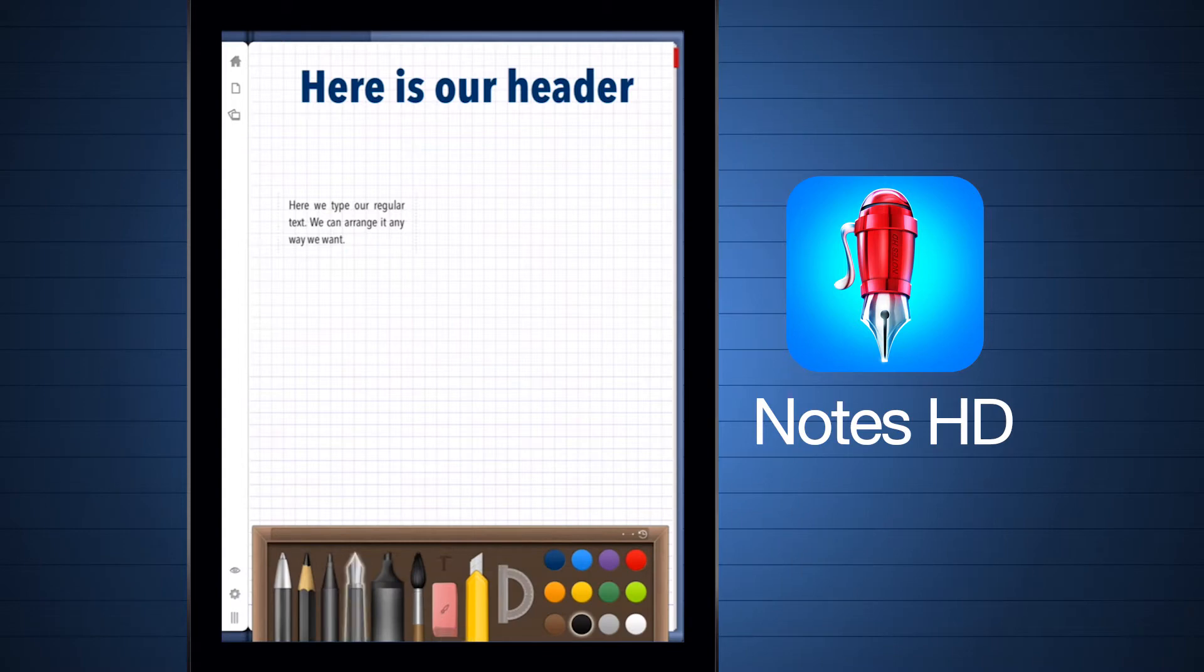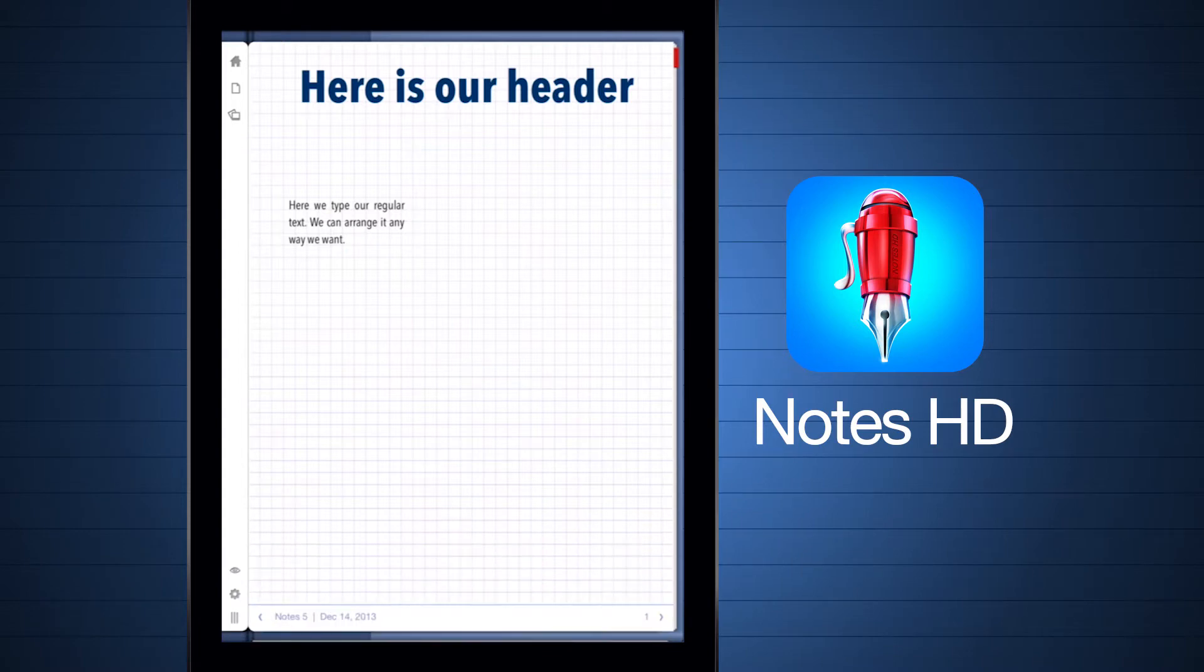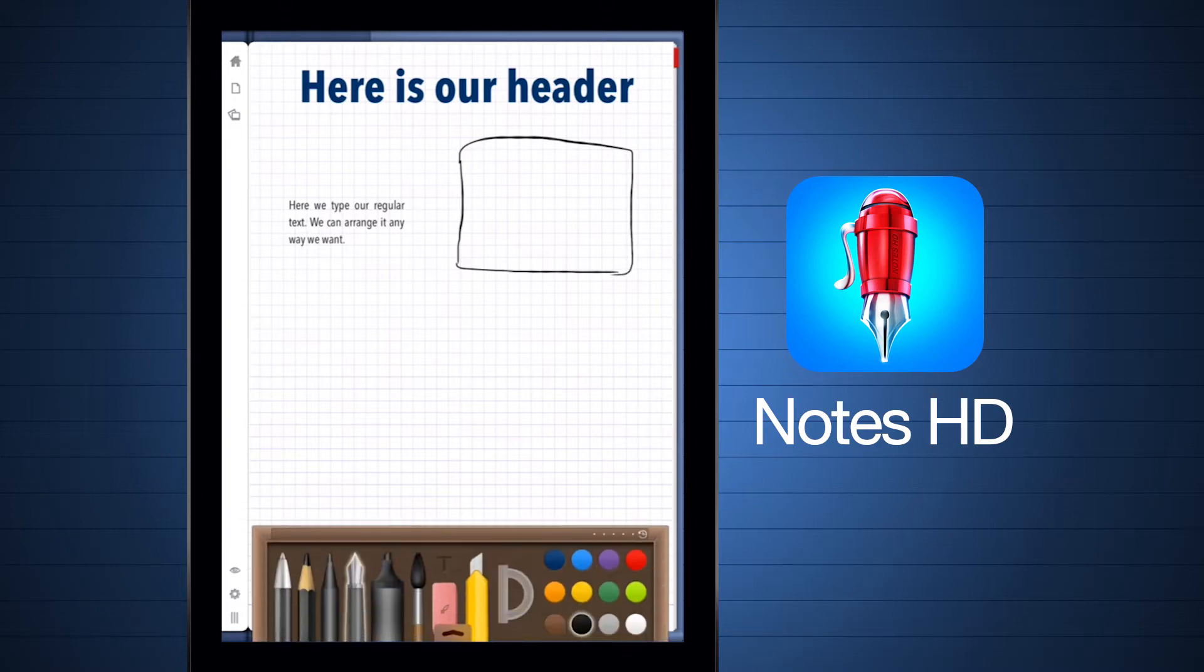Sliding up from the bottom of the screen brings in our tool palette where we have a wide variety of tools that we can use. With our pen tool, we can draw anywhere on the actual note and make a nice image by hand drawing with either our hand or a stylus.